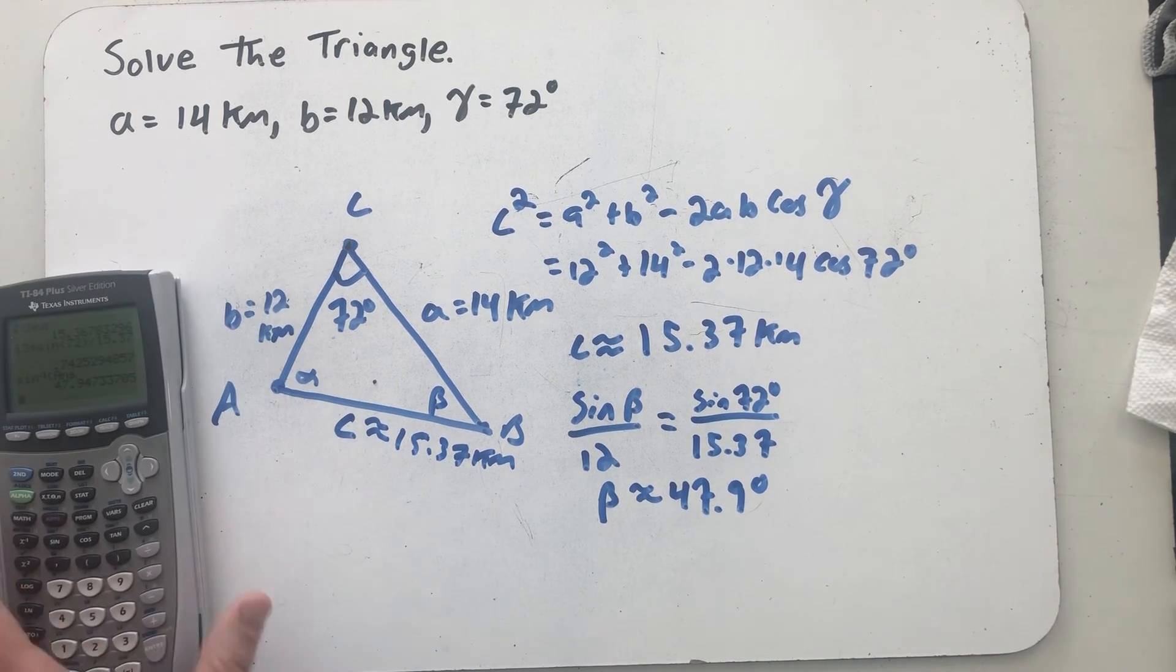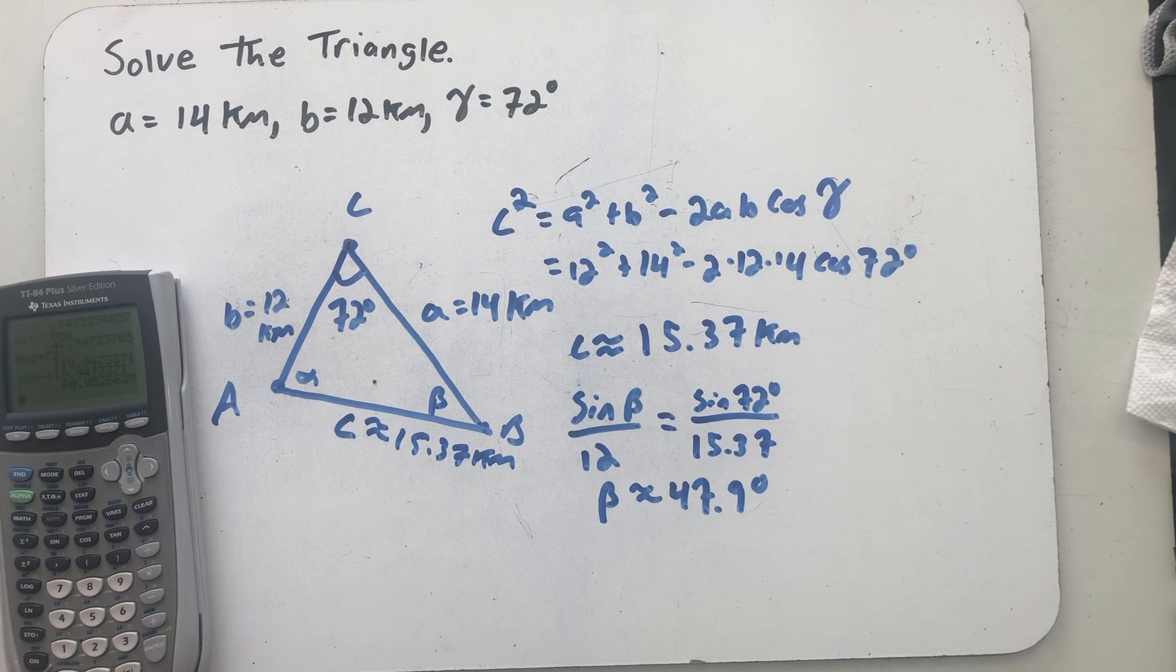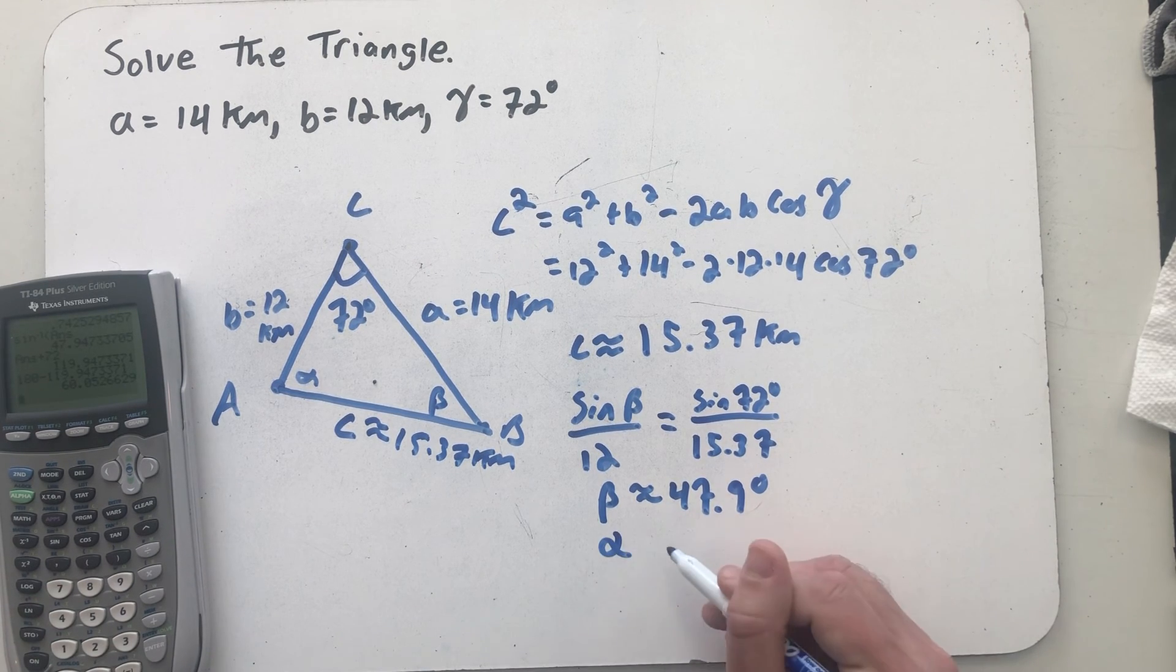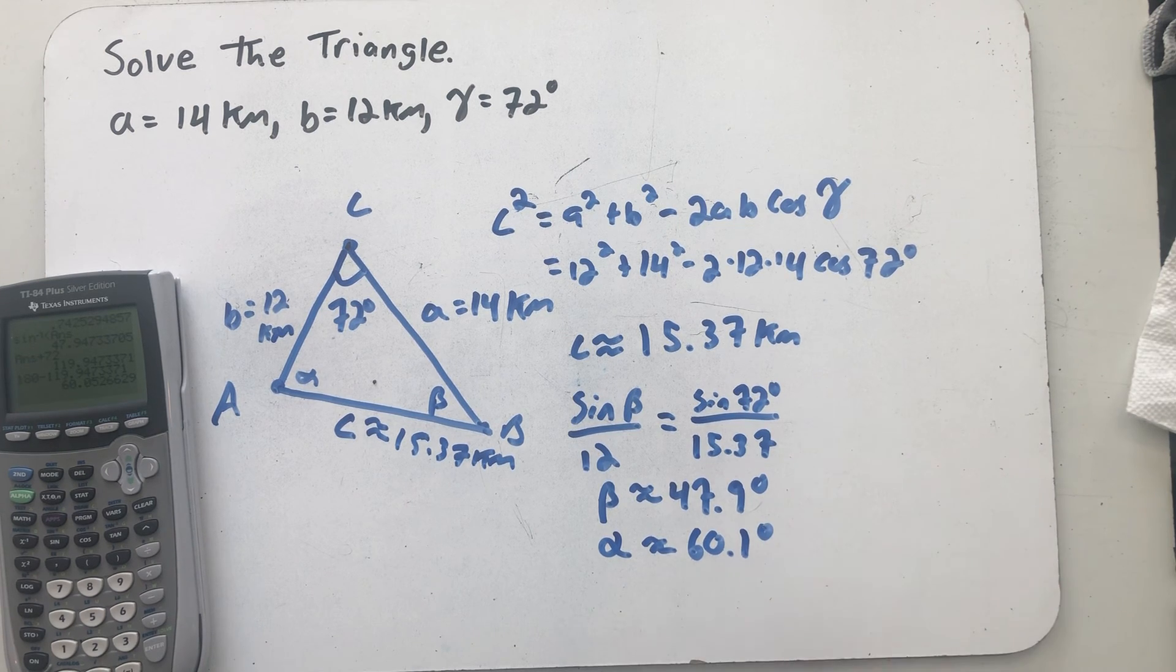I now know two angles in this triangle. So if I add 72 degrees and 47.9 degrees and subtract that from 180, I'll know what I'm dealing with. Alpha looks like it's going to be about 60.1 degrees. And we've solved our side angle side triangle.